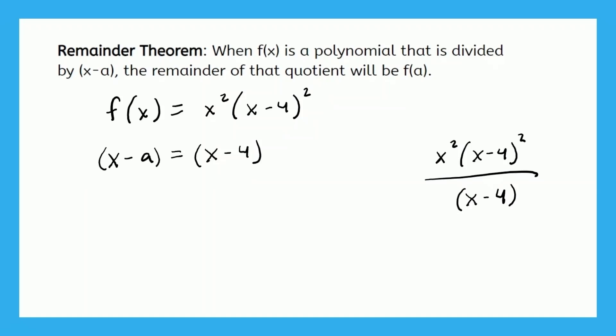But because we're doing the remainder theorem, we don't actually need to do long division because we're just trying to find the remainder. So what is the remainder? Well, it's going to be f(a). We know that a corresponds to 4. And f(4) is when we plug in 4 for x in the original function.